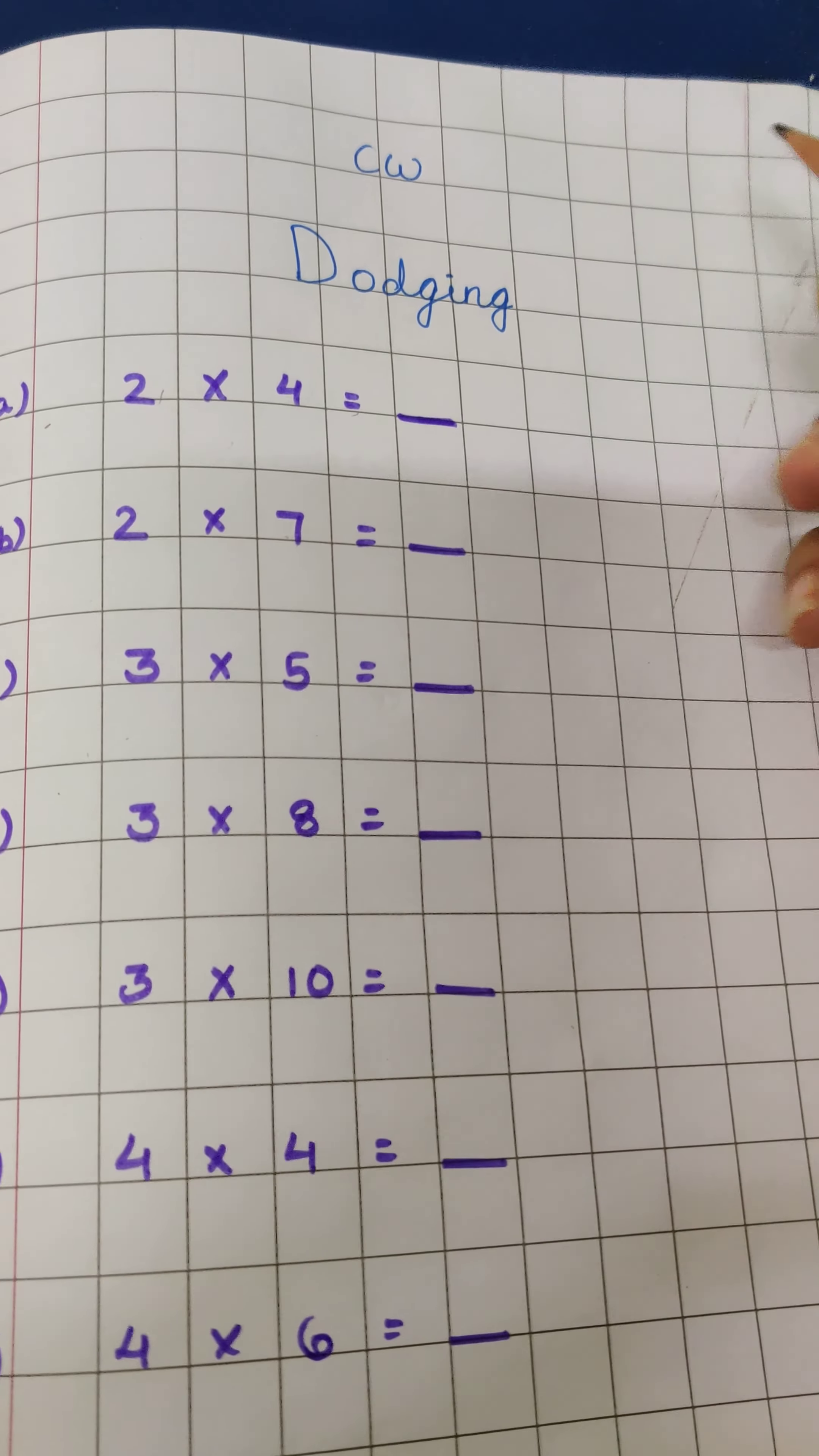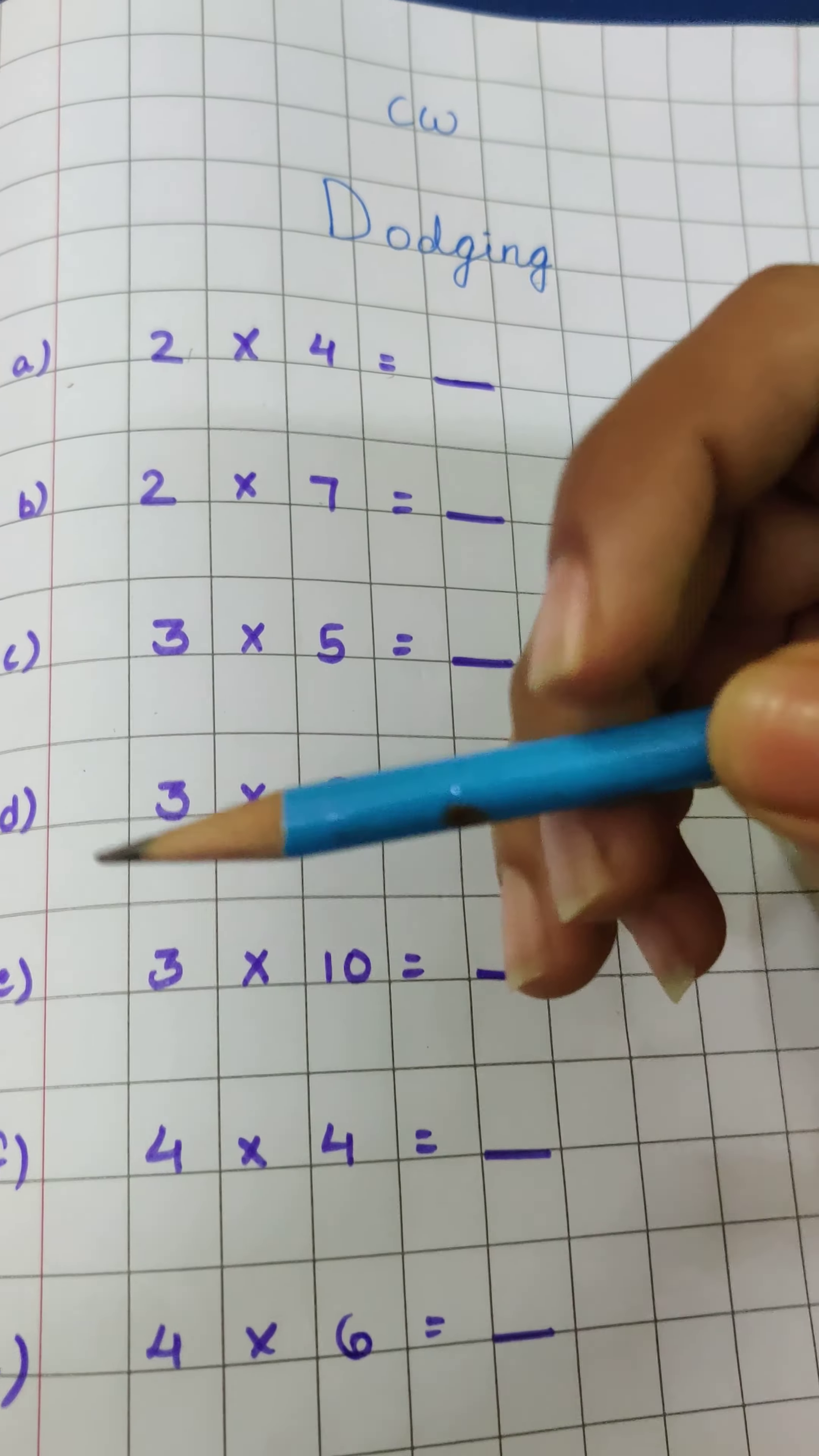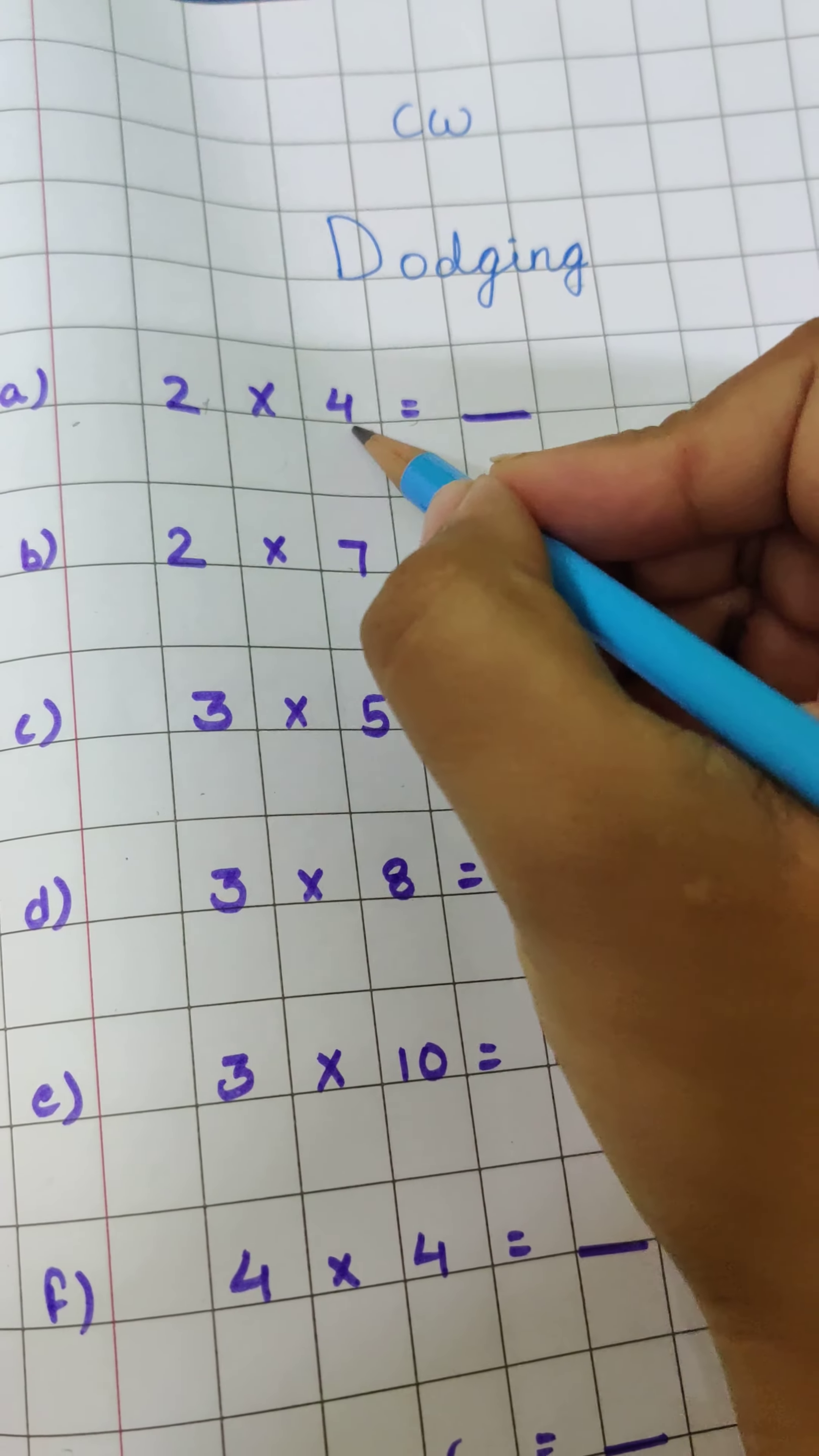Good morning children, this is your maths class and today we will do dodging of tables 2 to 4. So here ma'am have written 2 fours are, so we have to recite the table 2 up to the 4.